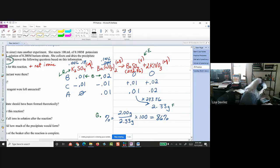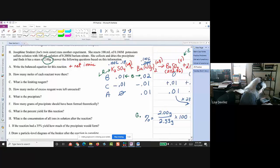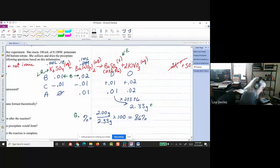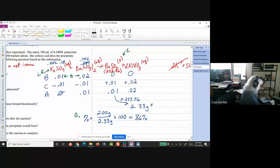All right. And, we're going to come back to H. But, let's go ahead and do I, because it says, if I had a 35 percent yield, how much of the precipitate would form? Okay. So, for I, all right.